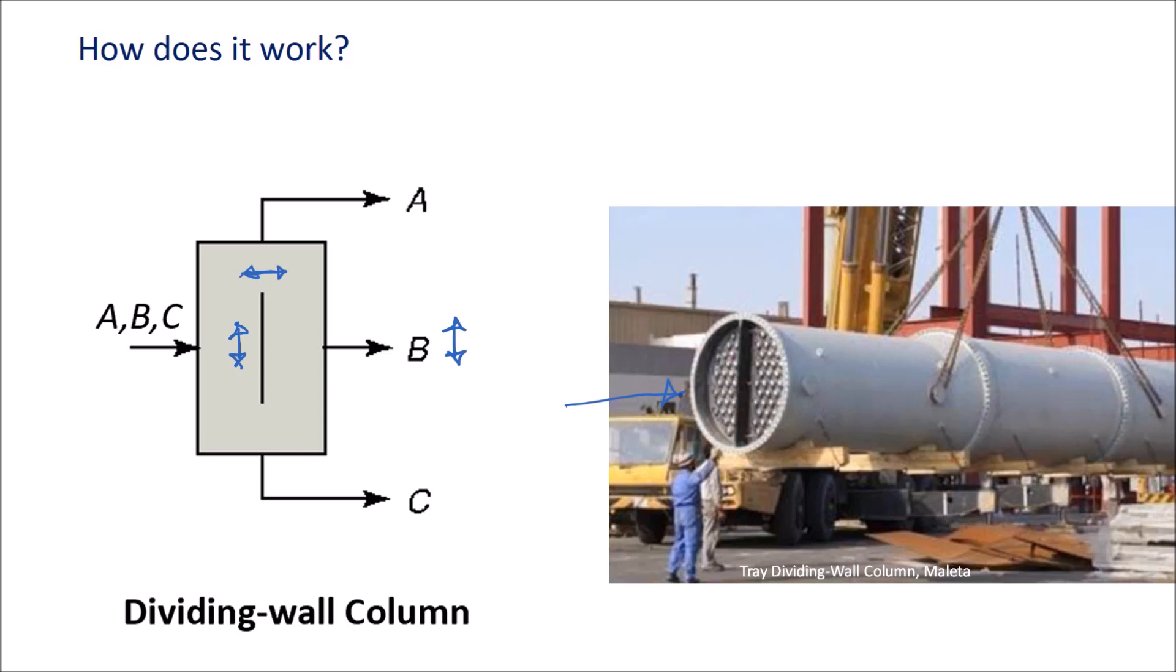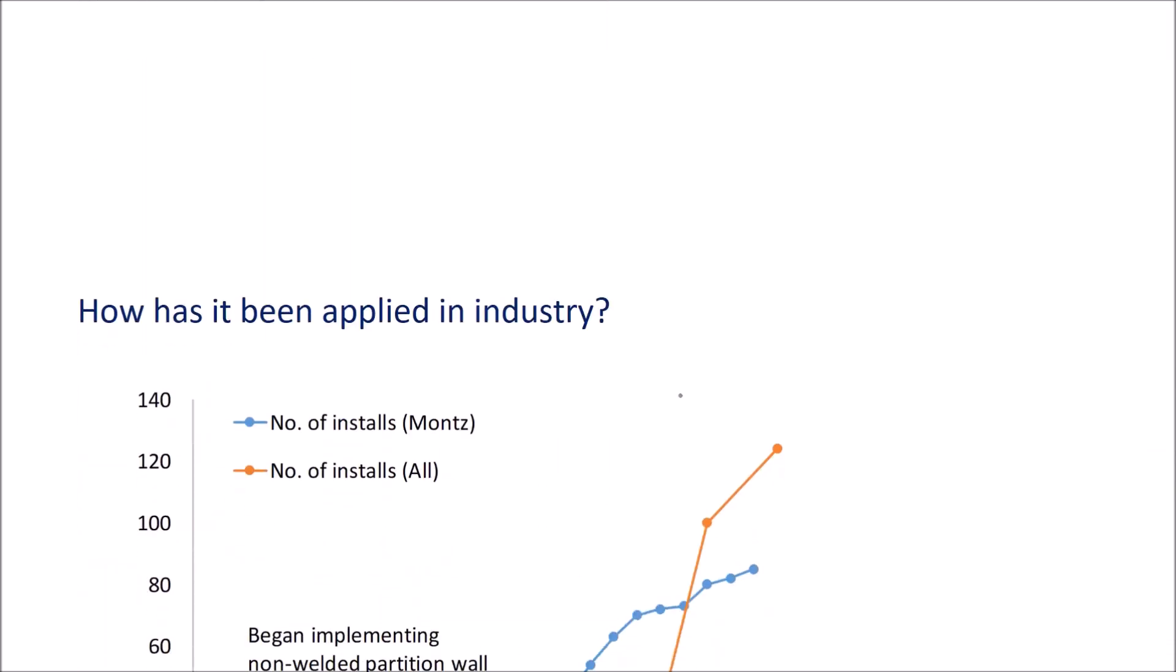Definitely some rules of thumb to look at to determine whether or not this would fit for a particular case. One example of when this might not be a good choice is when the utilities required for those two columns in the conventional sequence need to be at very different temperatures. For example, your steam for your reboiler needs to be very different temperatures or cooling water for your condenser. Another example is when the pressure for those two columns in the two column sequence needed to be very different. Because you're doing all of this in one vessel, you've lost that extra degree of freedom to have a different pressure in each column.